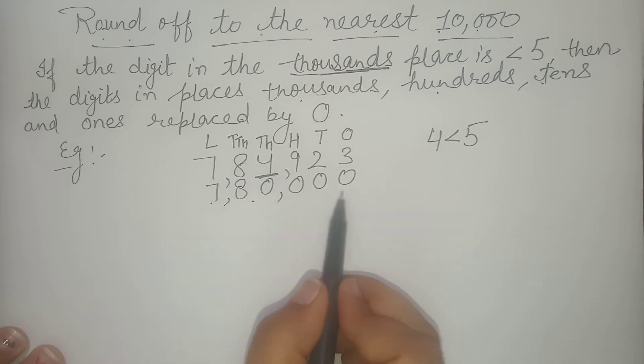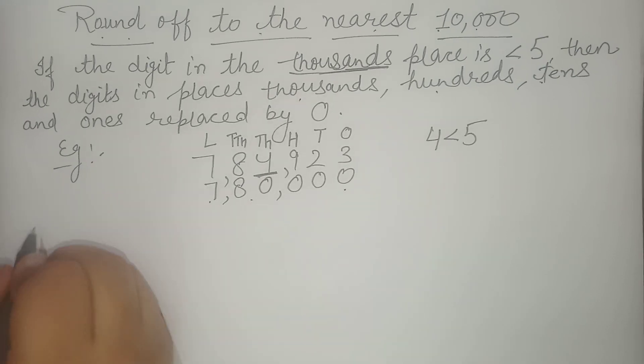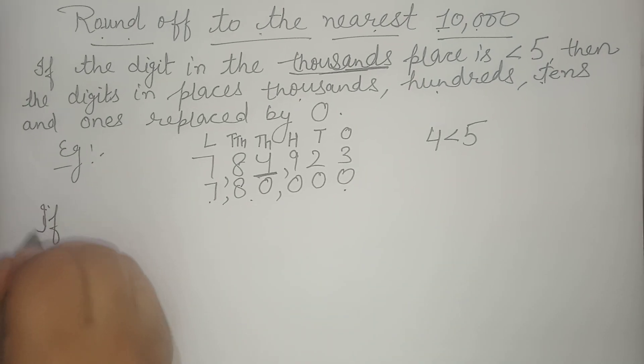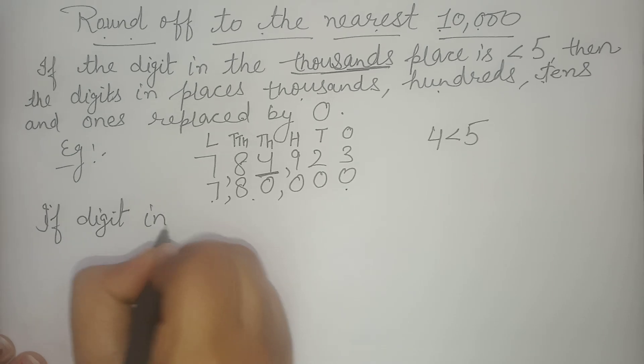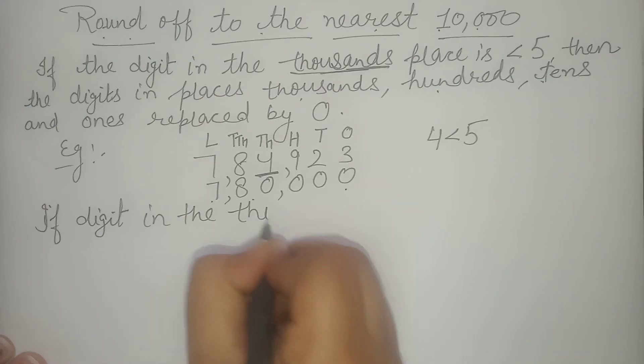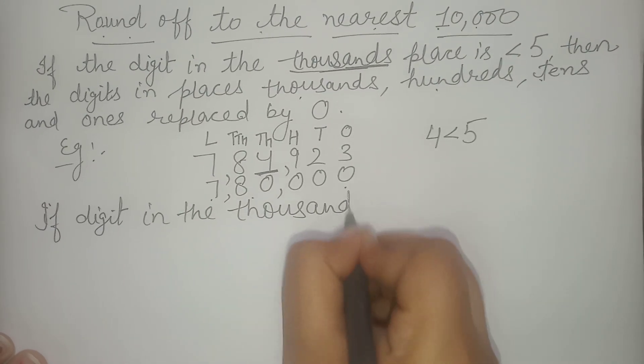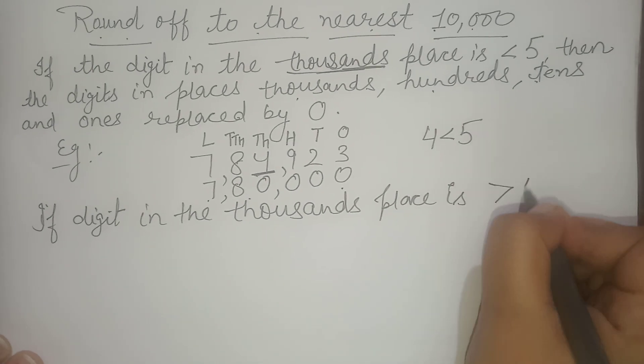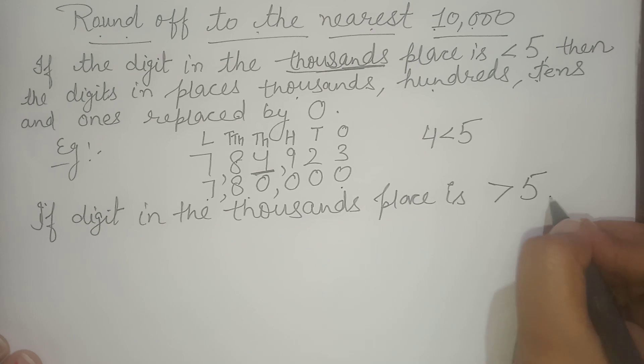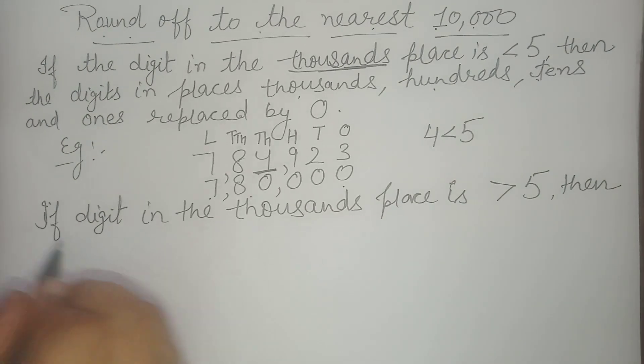And if the digit in the thousands place is greater than 5, then again the digits which are in the thousands, hundreds, tens and ones place will be replaced by 0.